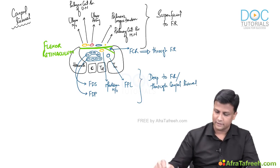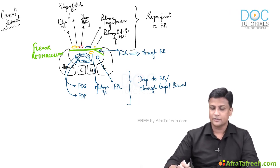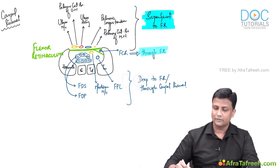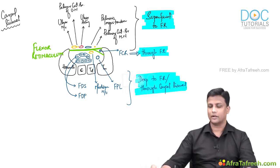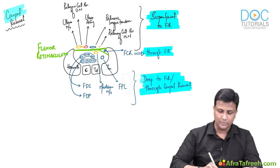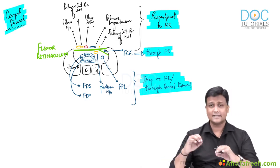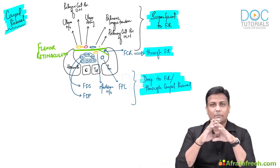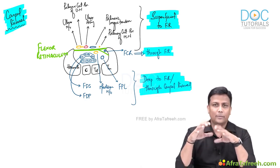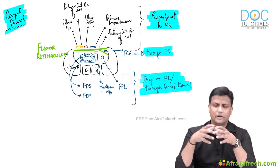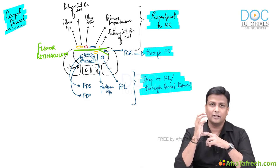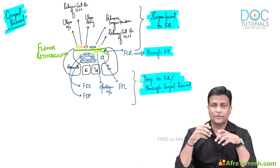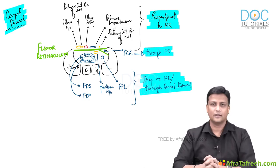In one simple diagram we have seen all structures passing superficial to the flexor retinaculum, the one passing through it, and those passing deep to it through the carpal tunnel. That completes the topic of carpal bones and carpal tunnel in a simple, conceptual manner. The best way to learn this is to follow all topics in sequential order — then this becomes just a cakewalk.